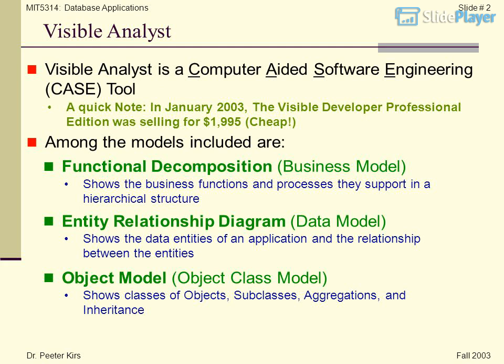Among the models included are Functional Decomposition, Business Model, which shows the business functions and processes they support in a hierarchical structure. Also included is the Entity Relationship Diagram, Data Model, which shows the data entities of an application and the relationships between them. The Object Model, or Object Class Model, shows classes of objects, subclasses, aggregations, and inheritance.